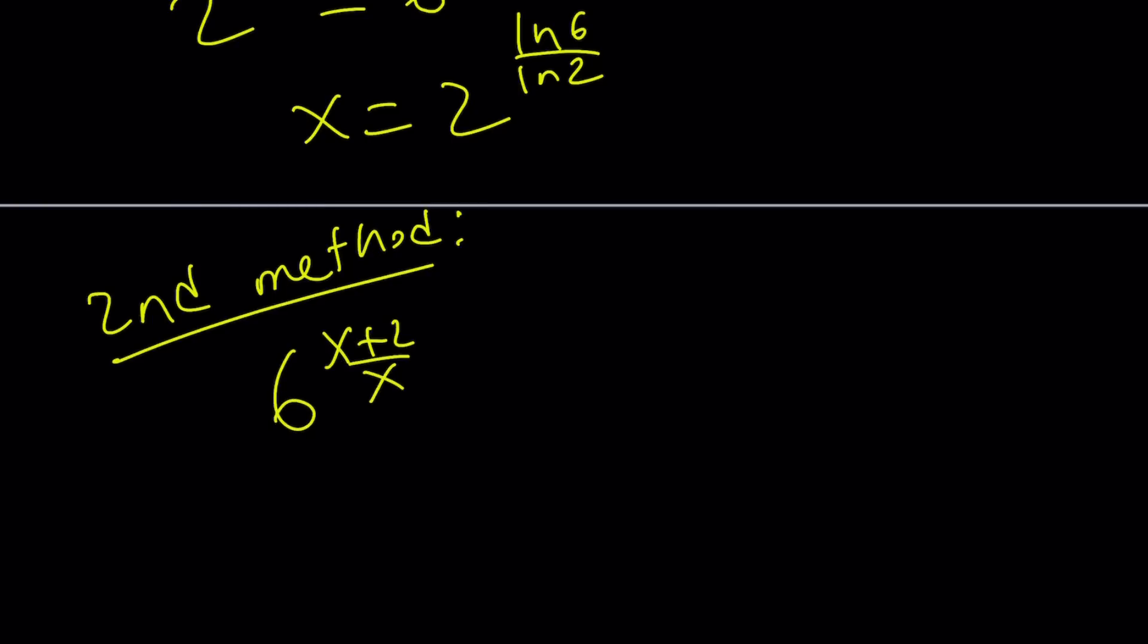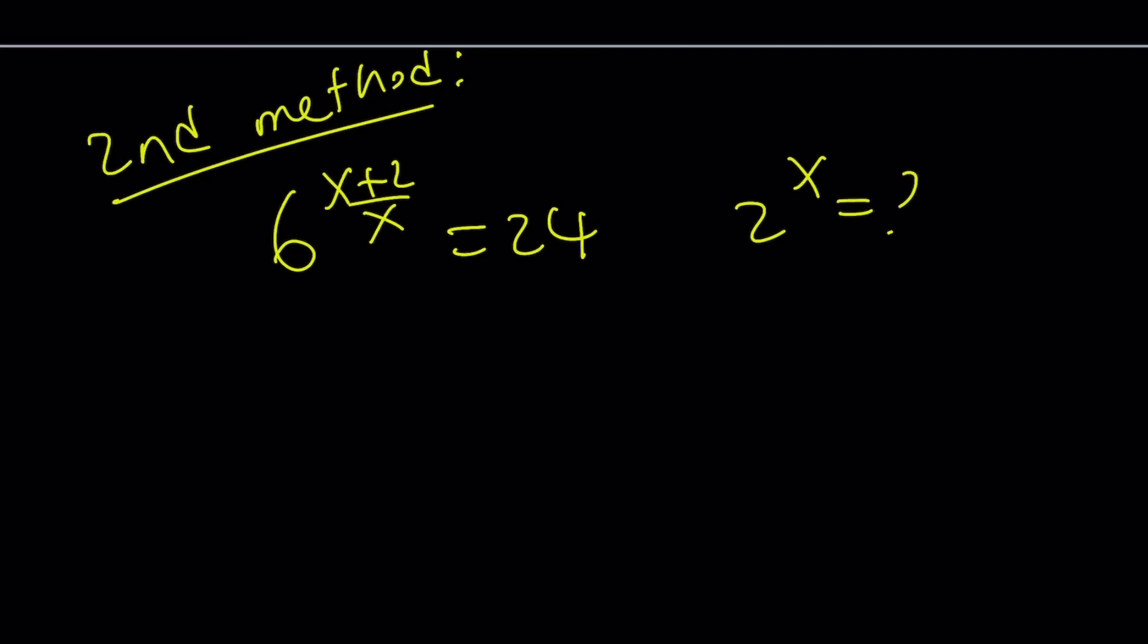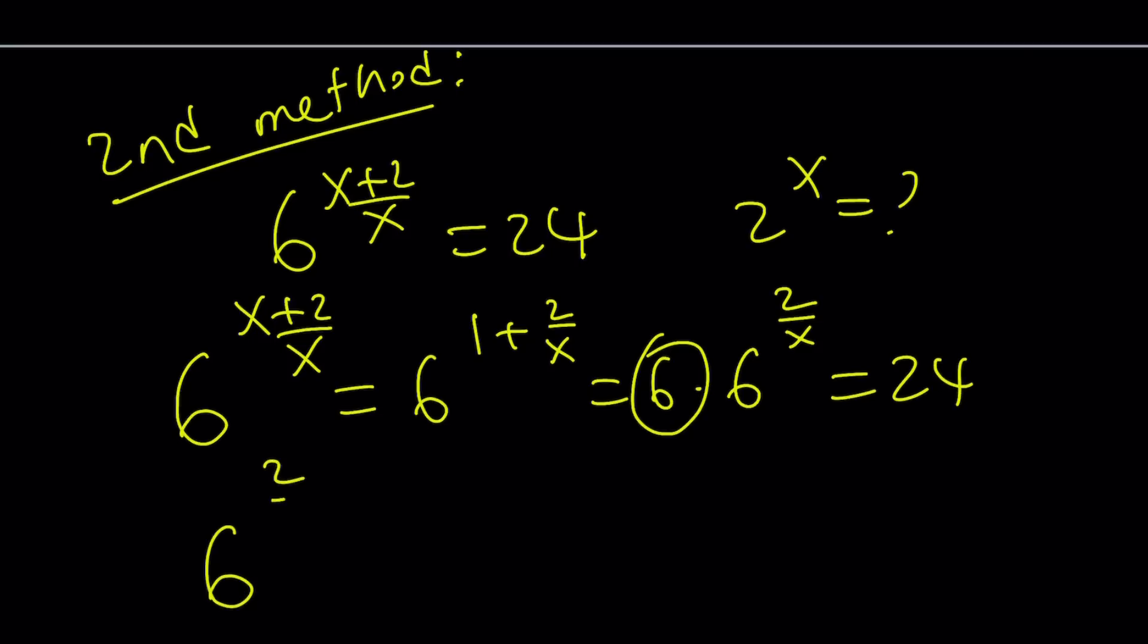6 to the power x plus 2 over x is 24. And I'm supposed to find 2 to the x. So, here's my second method. 6 to the power x plus 2 over x can be written as 6 to the power 1 plus 2 over x. You can split it up. And then this is 6 times 6 to the power 2 over x. And that's equal to 24. Divide both sides by 6. You get 6 to the power 2 over x equals 4.